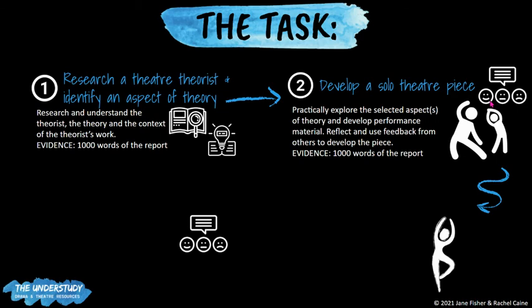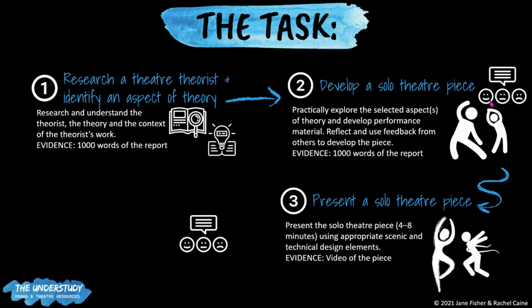Part C is performance — this is where you present your solo theatre piece to an audience. The solo theatre performance has to be between four to eight minutes; it cannot be under four minutes or over eight minutes. You should use appropriate scenic and technical, performance and production elements suitable to the particular aspect you have showcased. If you've chosen a theorist who does not use many props, sound, or lighting, be respectful of that, as it's important to display an understanding of this theorist's vision. There's nothing to write for Part C, but you will submit the video to the IB and they will mark it alongside your report.